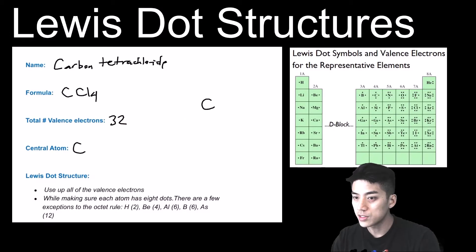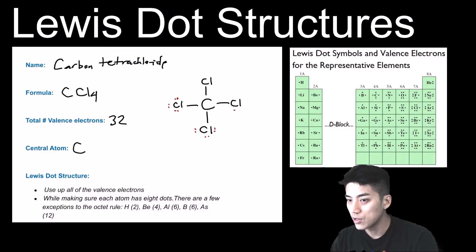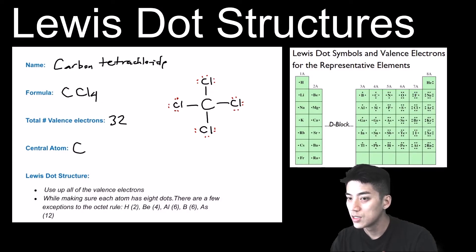Another way to draw this Lewis dot structure is to replace the eight dots surrounding carbon with four lines, since a line represents two electrons — but only do this when electrons are being shared with a different element. The lone pairs on chlorine have to remain as dots; you can't use lines for those. So the bonded electrons can be represented as lines, giving carbon 2, 4, 6, 8 electrons — and only those eight bonded electrons can be redrawn as lines.